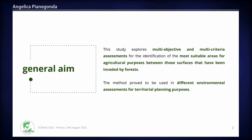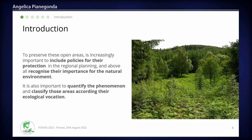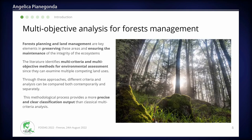The context in which we are working is European mountainous regions that have been invaded by forests in recent decades. These open areas play a key ecological role for biodiversity conservation. This phenomenon is particularly evident in the Trentino region in Italy, where important land use changes are reducing open areas fundamental for ecological purposes. To preserve these areas it is increasingly important to include policies for their protection in regional planning, quantify the phenomenon, and classify those areas according to their ecological vocation. Forest planning and land management are key elements in preserving these areas and ensuring ecosystem integrity.